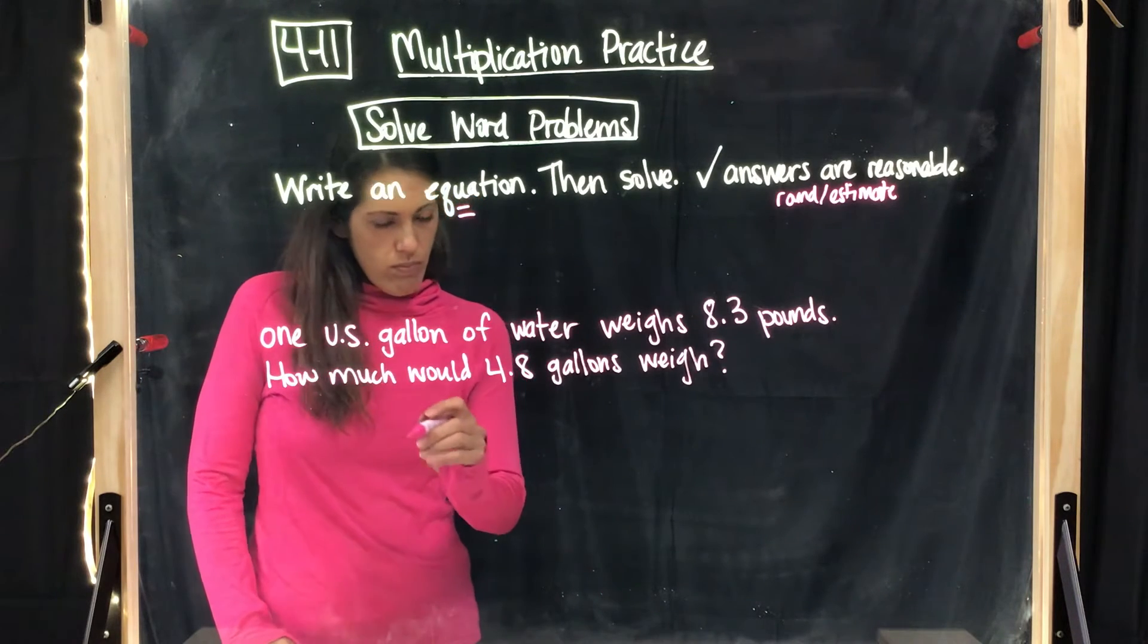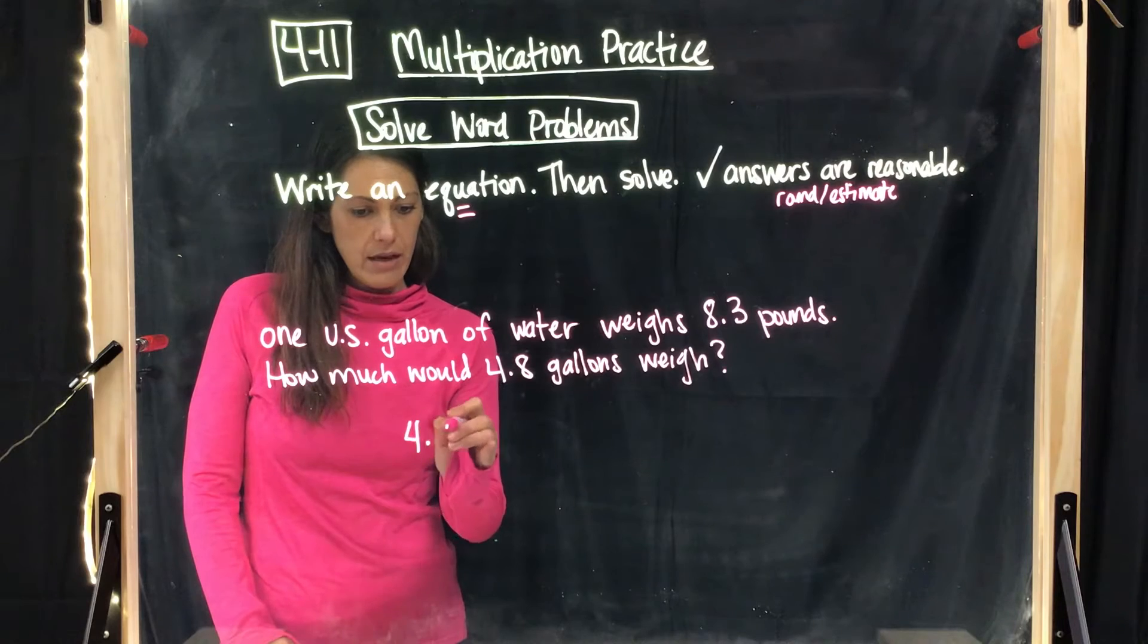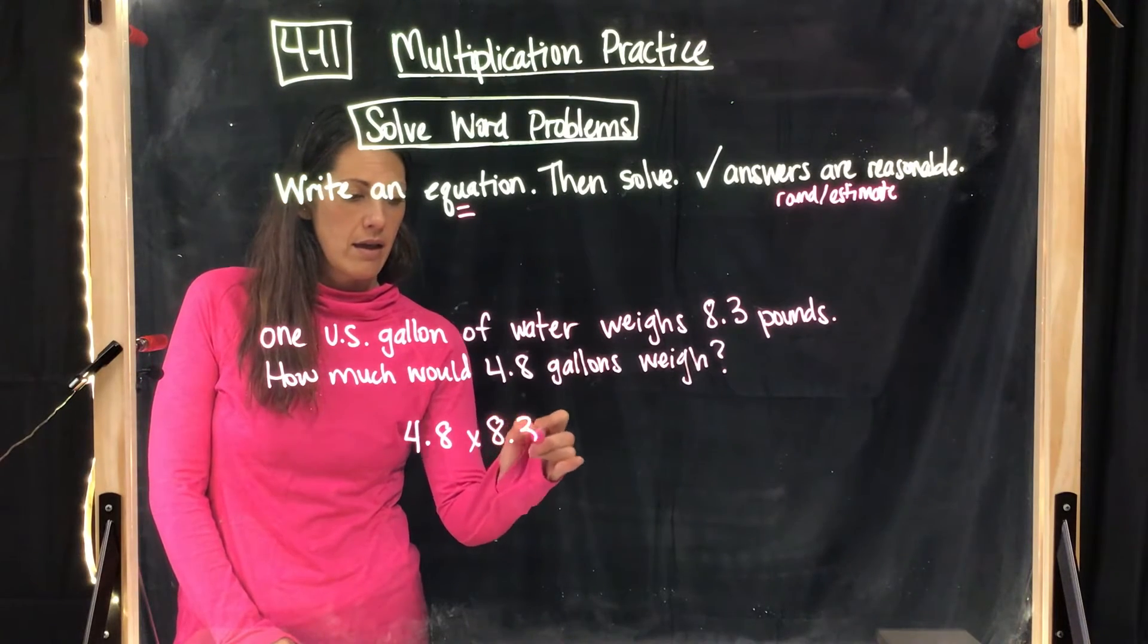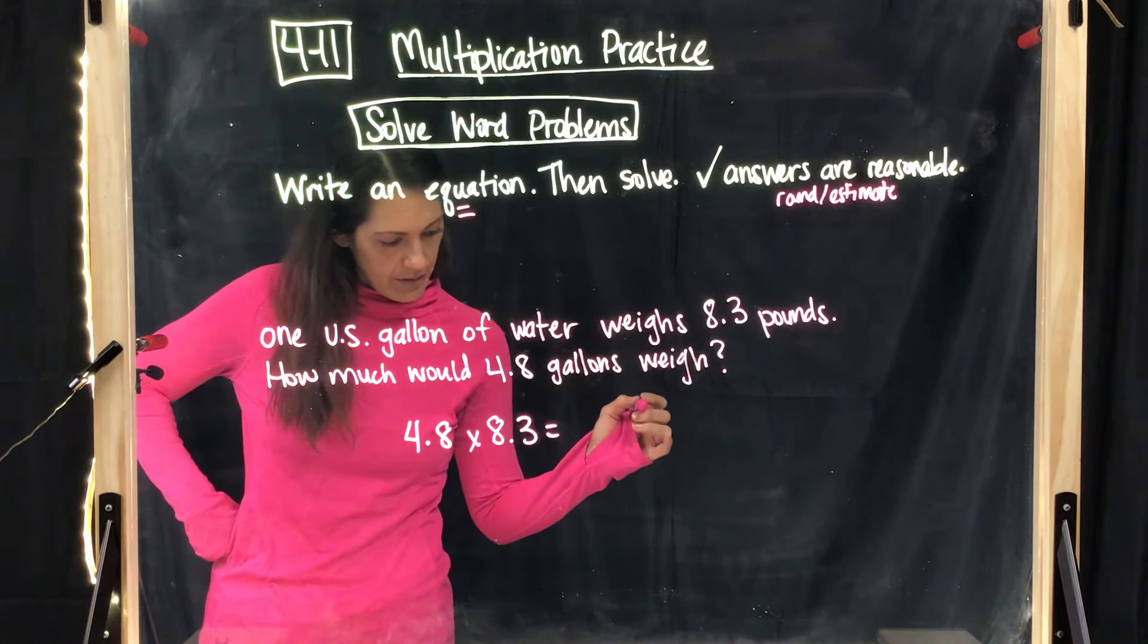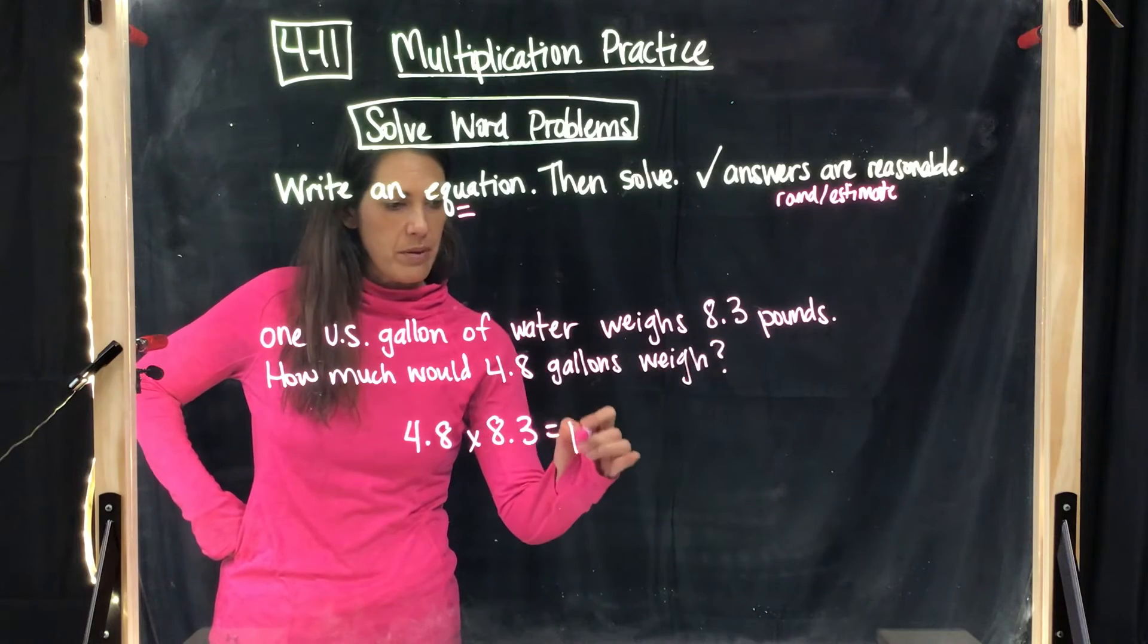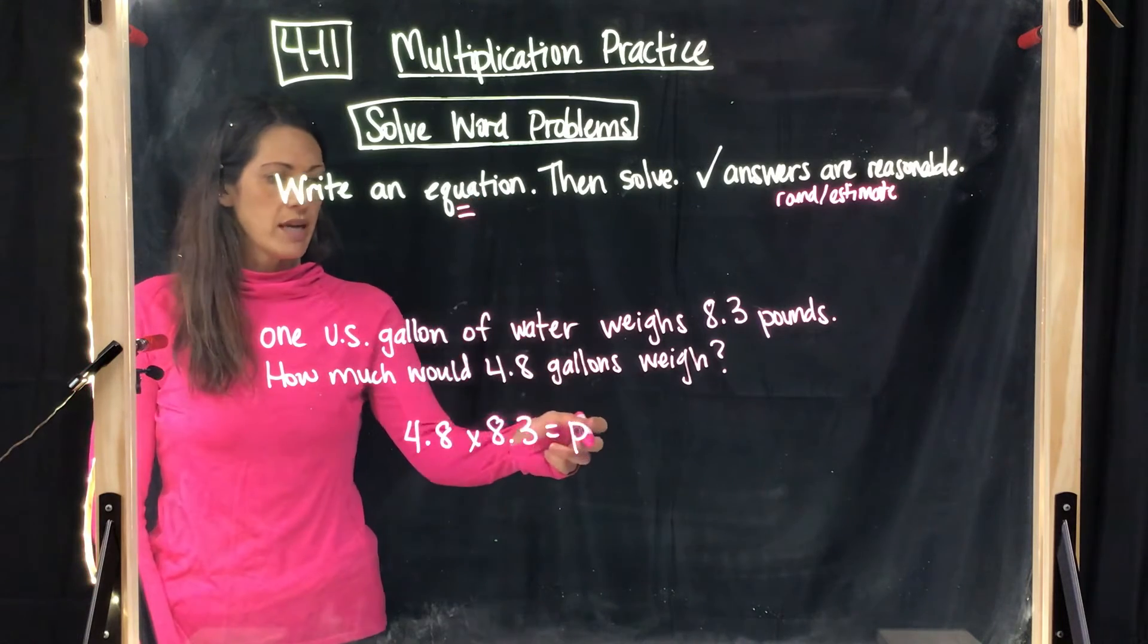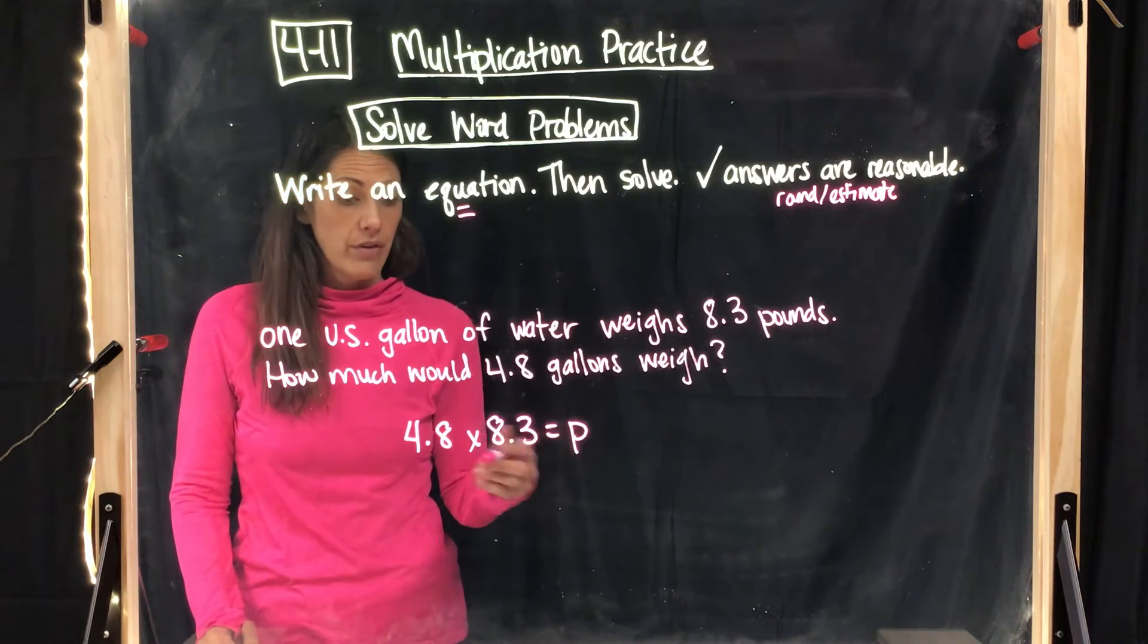If I know that one gallon is 8.3 pounds, how much would 4.8 gallons weigh? For this equation, I would take 4.8. That's how many gallons I have. And if each gallon weighs that much, I would multiply by that to get the weight. So I'll put P for pounds. Your variable doesn't matter. This would be my equation. My equation has an equal sign and a variable, the P for pounds or whatever letter you want. And now I have to solve.